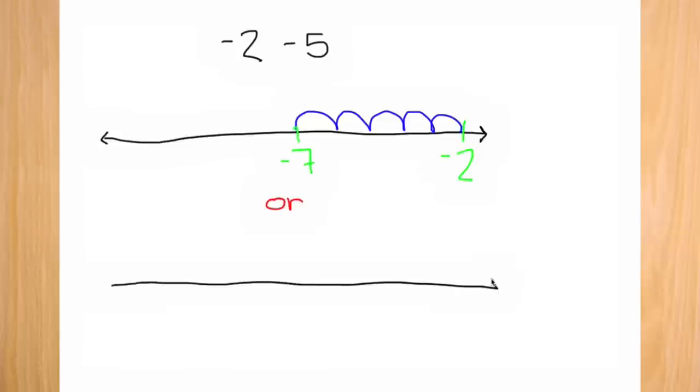You can do this method a different way. Again, draw your number line and mark the negative two. Now, instead of jumping five individual spaces, just jump one big one. If you've finished this problem correctly, you should have got the answer negative seven.